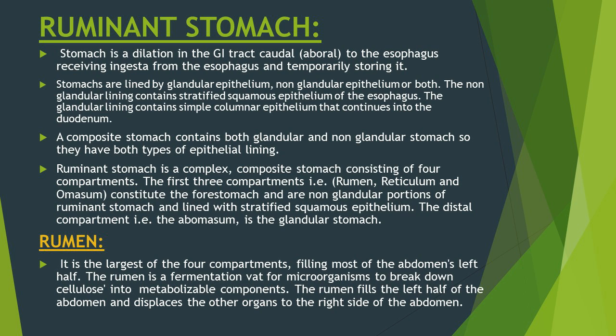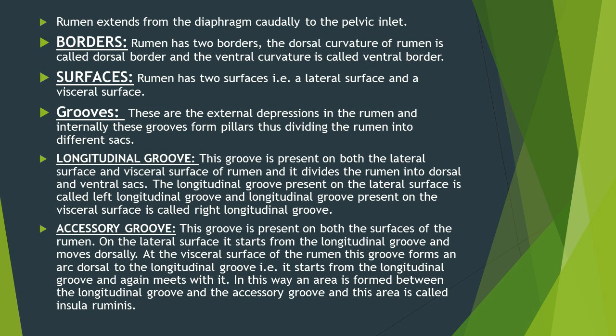Rumen is the largest compartment of the ruminant stomach and fills most of the abdomen's left half, present on the left side of the abdominal cavity. Due to its large size, other organs in the abdominal cavity are displaced to the right side. Rumen is a site where fermentation of ingesta occurs. Anatomically, it is present on the caudal aspect of the diaphragm up to the pelvic inlet.